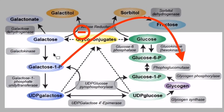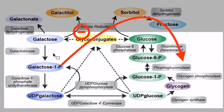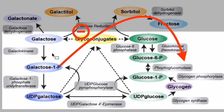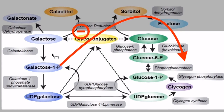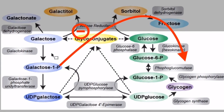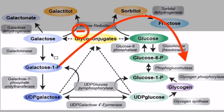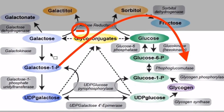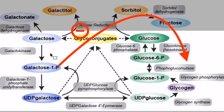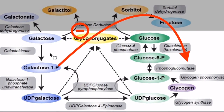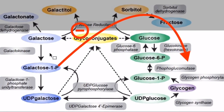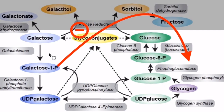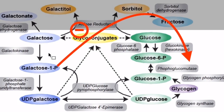When GALT is deficient, the concentration of galactose-1-phosphate increases, thereby inhibiting phosphoglucomutase. Phosphoglucomutase catalyzes the interconversion of glucose-6-phosphate and glucose-1-phosphate. Hence, there is hypoglycemia when GALT is deficient.